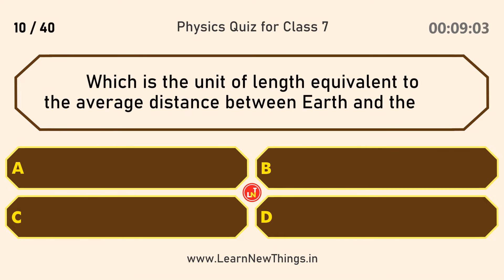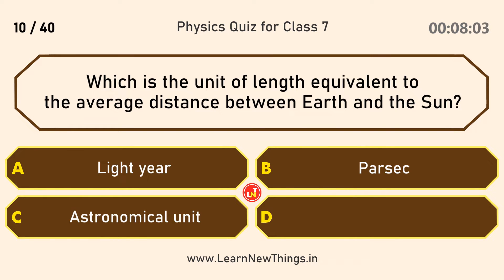Which is the unit of length equivalent to the average distance between the Earth and the Sun? Astronomical unit.